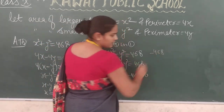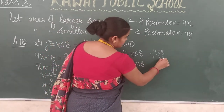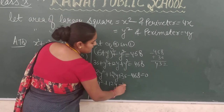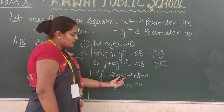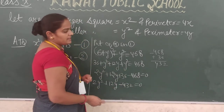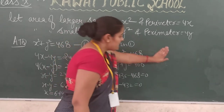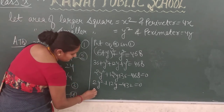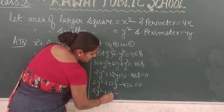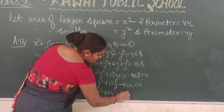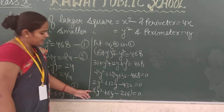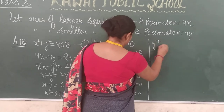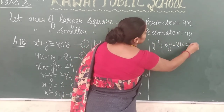Subtracting 468 from 36 gives minus 432. So 2y squared plus 12y minus 432 equals 0. Taking 2 as common: y squared plus 6y minus 216 equals 0. Dividing throughout by 2 gives 0, so the simplified standard form of the quadratic equation is y squared plus 6y minus 216 equals 0.